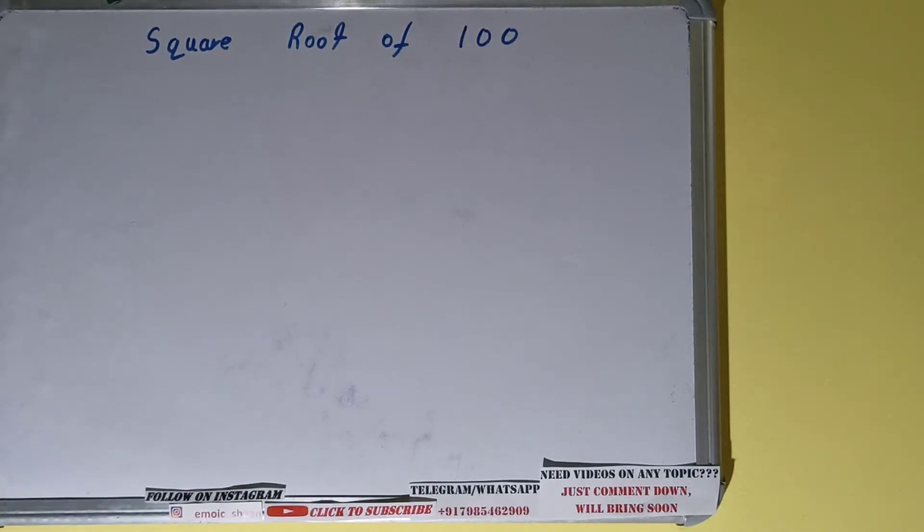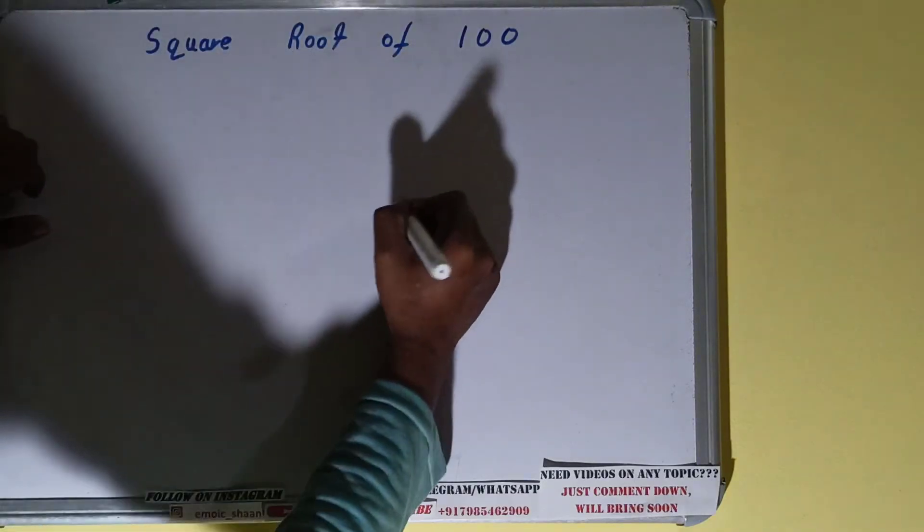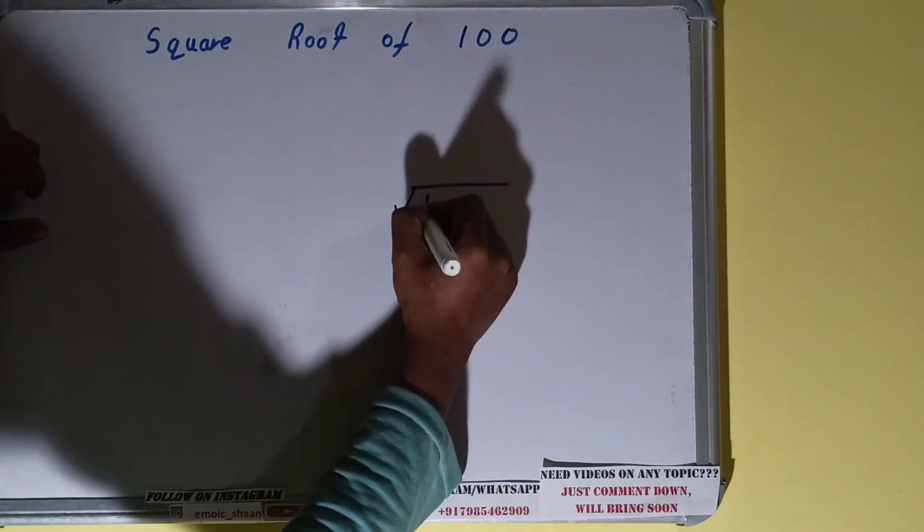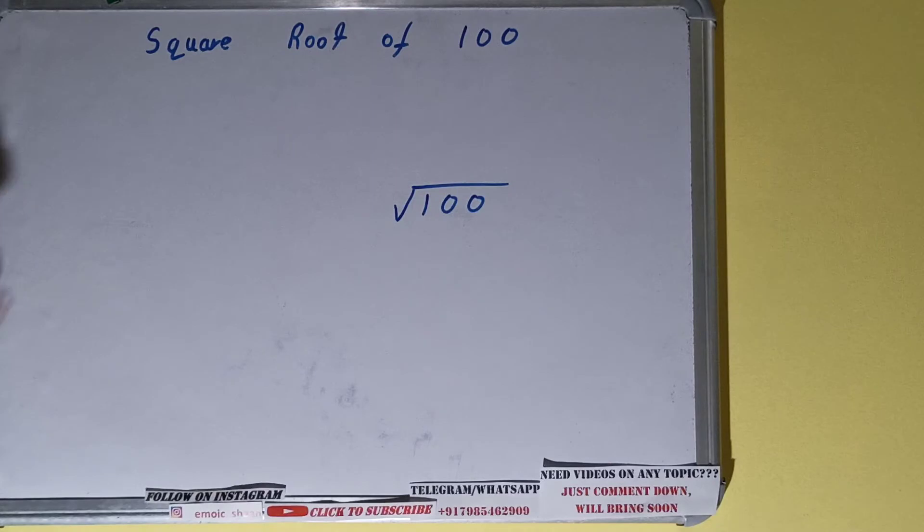Hello friends, in this video I'll be helping you with the square root of the number 100. So let's start. We'll be solving this with the help of prime factorization method. Now before solving this, remember one thing: prime factorization method can only be used for perfect square numbers. For other numbers you can also use it, but only for simplification.